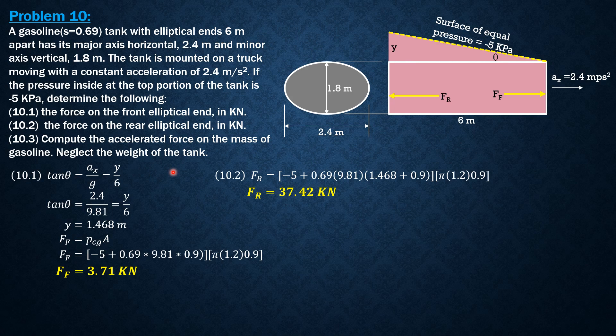Then for the accelerated force on the mass of gasoline, it should be the force in the direction of acceleration, F a, but that F a is also equal to the reverse effective force, which is just equal to mass times acceleration. So instead, we compute the reverse effective force, mass times acceleration, where acceleration is 2.4. The mass of gasoline is density of gasoline 0.69 times density of water 1,000 kilograms per cubic meter, then times volume, which is area of ellipse phi AB times length 6 meters, then multiplied by a, and the result will be in newtons. So that's why we had to divide everything by 1,000.